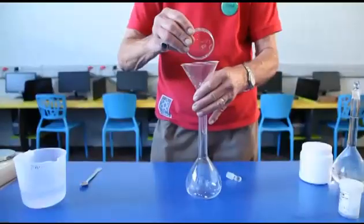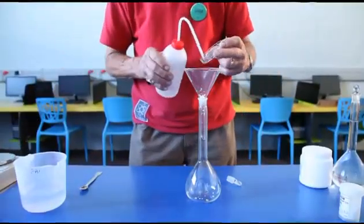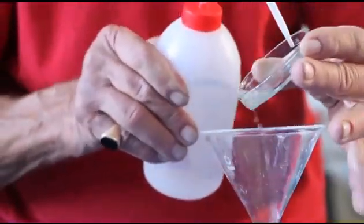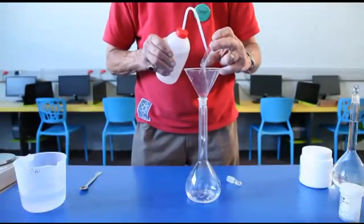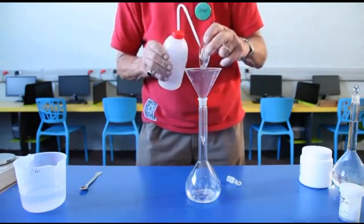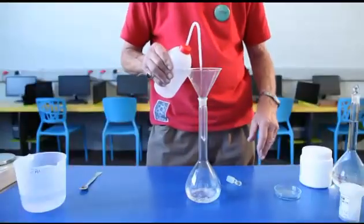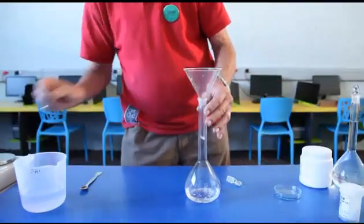Using a clean funnel, transfer the acid to the clean 500 milliliter volumetric flask. Use a wash bottle with distilled water to ensure that all the acid has been transferred into the flask. With all the crystals in the flask, add a little distilled water to dissolve the crystals.